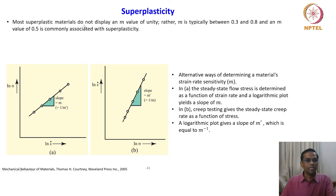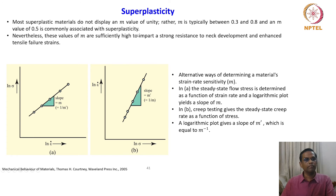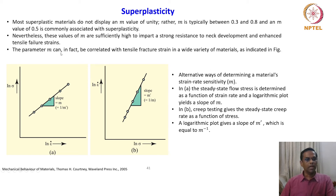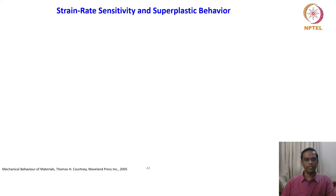Most superplastic materials do not display an m value of unity. Rather, m is typically between 0.3 and 0.8, and an m value of 0.5 is commonly associated with superplasticity. Nevertheless, these values of m are sufficiently high to impart a strong resistance to neck development and enhanced tensile failure strains. The parameter m can in fact be correlated with the tensile fracture strain in a wide variety of materials.